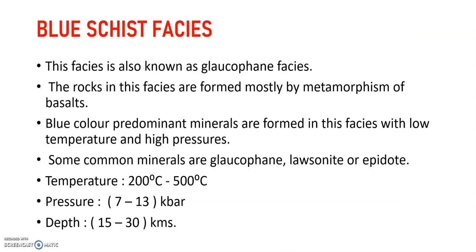Blueschist facies, also known as glaucophane schist facies, forms mostly by metamorphism of basalt. Blue color predominant minerals are formed in these facies under low temperature and high pressure conditions. Some common minerals are glaucophane, lawsonite, and epidote. It occurs at temperatures of 200°C to 500°C, pressures of 7 to 13 kilobars, and depths of 15 to 30 kilometers.